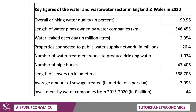Some key stats on the water and wastewater sector in England during 2020: very high drinking water quality at 99.96%. There are hundreds of thousands of kilometres of water pipes owned by the regional water companies, but nearly 3 billion litres of water leak from the system each day — a massive level to bear in mind when thinking about the efficiency of water industry regulation. Over 25 million properties are connected to the public water supply.